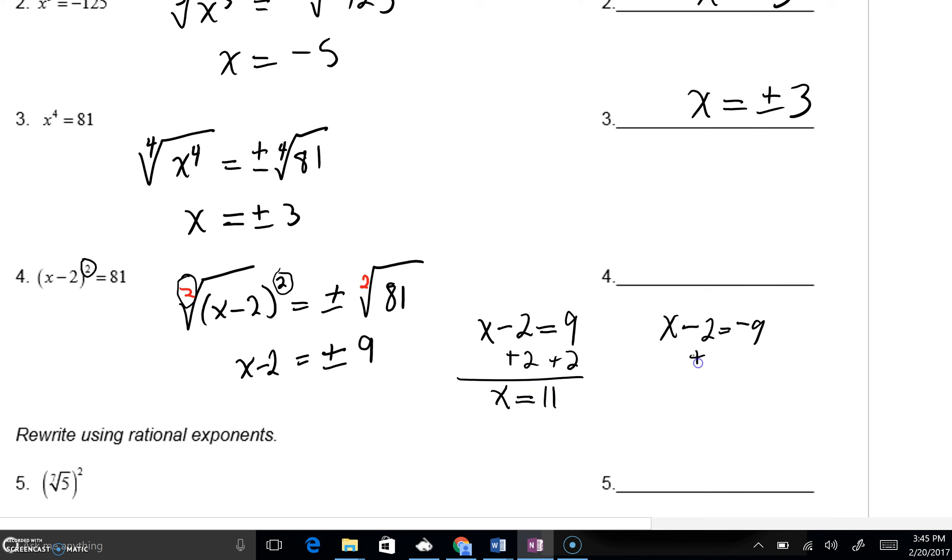Here, we'd add a 2. Negative 9 plus 2 is negative 7. Two answers. We'd get x equals 11 or x equals negative 7.